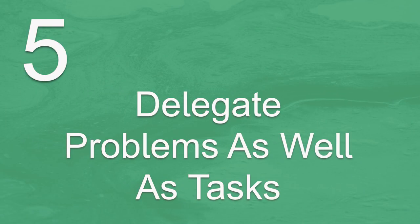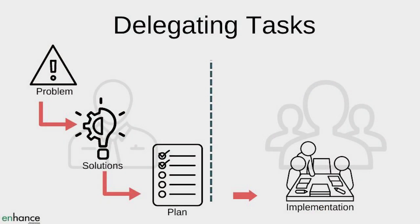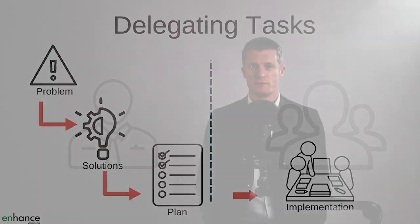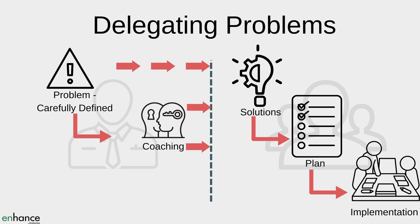The fifth factor in creating team accountability is to delegate problems as well as tasks. Delegating tasks requires you to have articulated the goal, worked out the problems, devised solutions and created a plan of action — then you delegate tasks by telling the team members what to do. This process treats them more like resources or robots and implicitly tells them you don't yet trust them to do these steps. Delegating problems only really requires you to articulate the goal clearly or pose the right question, then you are asking the team members to work out the problems, devise the solutions and create a plan of action as well as do the actual tasks.